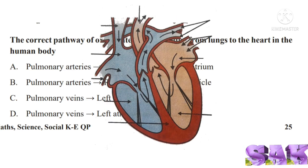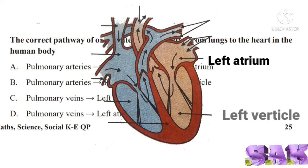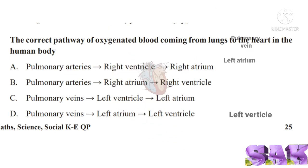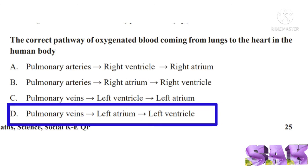Upper chambers of heart are called auricles or atrium, and lower chambers are called ventricles. Blood vessels which bring blood to the heart are called veins. Vessels which carry blood away from heart are called arteries. So correct answer for this question is pulmonary veins to left atrium to left ventricle.